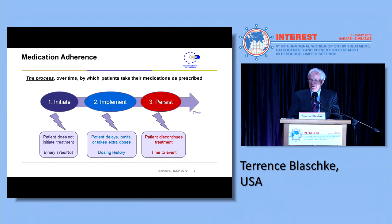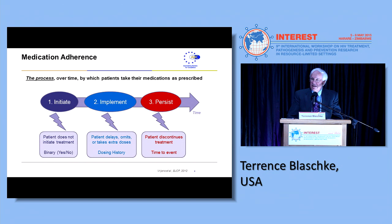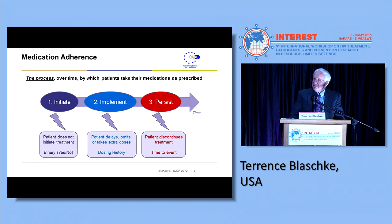Adherence is a process over time by which patients take their medications as prescribed. There are three components: initiation, implementation, and persistence. Initiation is whether or not the patient initiates their treatment — it's a binary variable; you either do or you don't. Implementation talks about how you actually take the drug once you've started — you may delay, omit, or take extra doses, which constitutes the so-called dosing history.